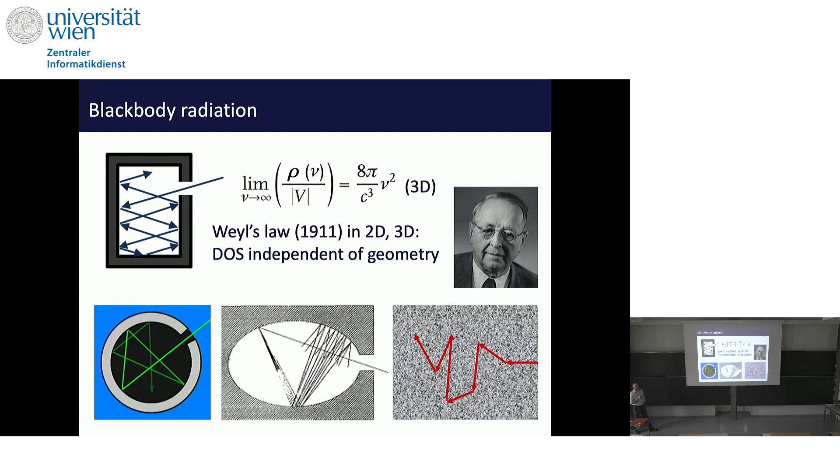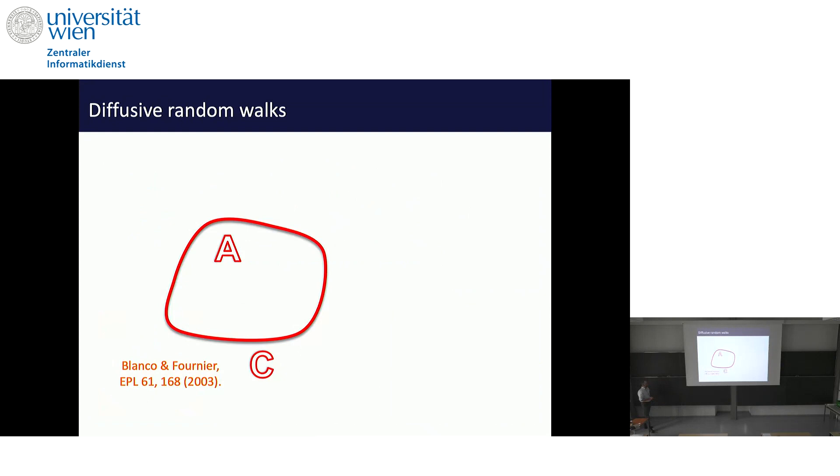I will show you now a very oversimplified representation of what happens to light rays in such a disordered medium. This was developed by two French mathematicians who didn't even think of light, but just thought about a random walk. They had the following problem. They said, let's have a bounded domain with a circumference C and area A. Let's assume that we make a random walk through this domain. For example, take an ant that makes a random walk. Well, ants don't actually do random walks, but let's assume it's a drunken ant that really makes a random walk.